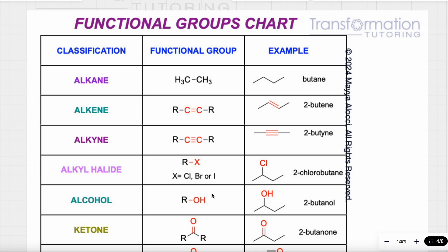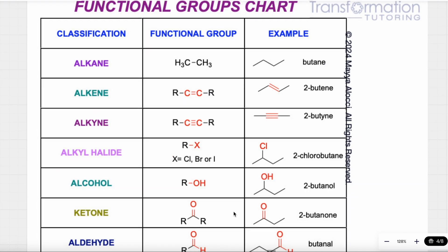We can also have an OH as a functional group. If our molecule is attached to an OH, this is an alcohol. For example, here I'm showing a molecule where OH is on the second carbon — the name is 2-butanol. Again, if we see an OH, that's an alcohol.